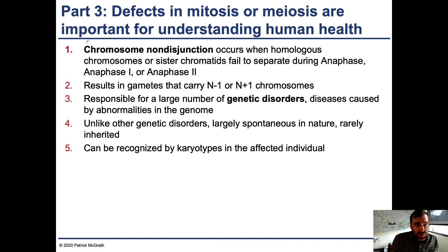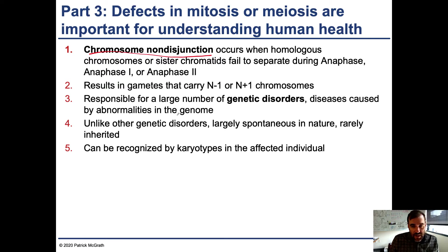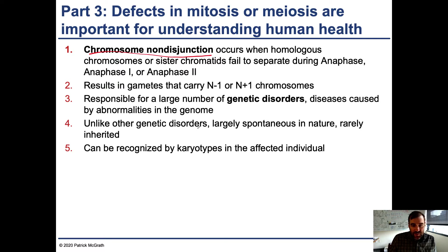This occurs because of something called chromosome non-disjunction, which occurs when either homologous chromosomes or sister chromatids fail to separate during anaphase 1 or anaphase 2. It results in gametes that carry an improper number of chromosomes. It's responsible for a large number of genetic disorders — diseases caused by abnormalities in the genome — and unlike other genetic disorders, these are largely spontaneous in nature, rarely inherited, and can be recognized by karyotypes.